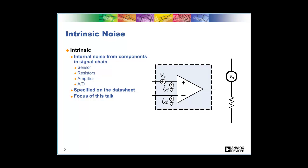Okay, what we are going to talk about today is intrinsic noise. That is noise from the components themselves. This is the noise that you'll see when you see the specifications in a datasheet. In a typical signal chain, there's three main sources of intrinsic noise: the resistors, the amplifiers, and the A to D. You could count the sensor that you're using as well.